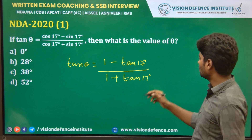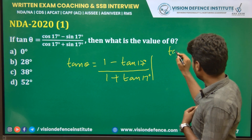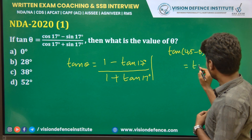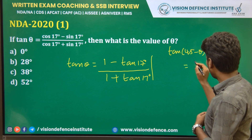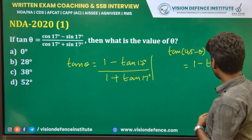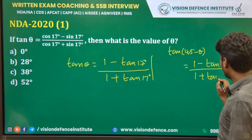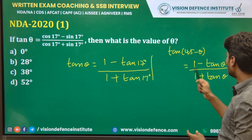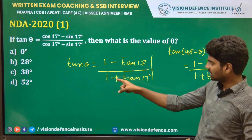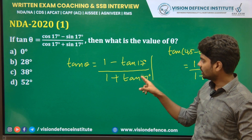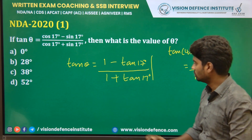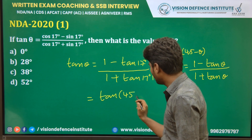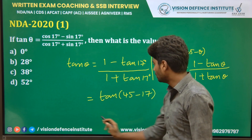Where have you seen this formula? This formula is tan(45° - θ) = (1 - tanθ) / (1 + tanθ). We have exactly that — 1 minus tan17° divided by 1 plus tan17° — so this can be written as tan(45° - 17°).